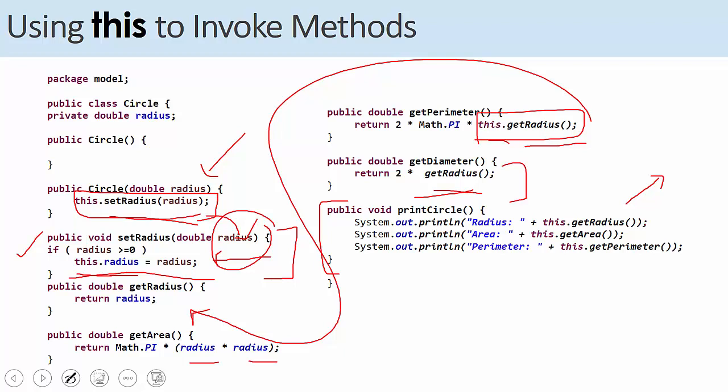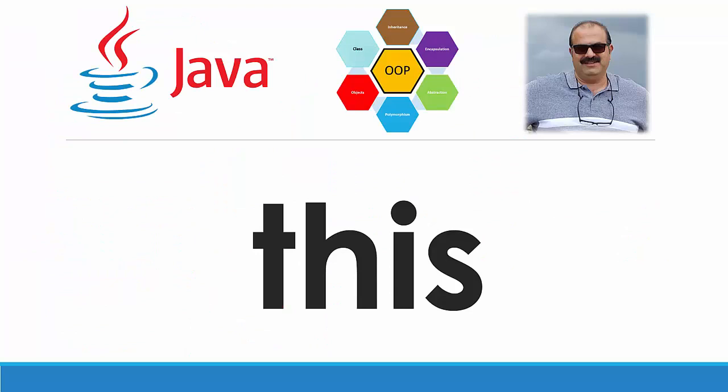So we have seen three uses for this: to avoid overshadow, to avoid duplication of code when you use constructor overloading, and to call methods and instance variables inside the class itself. There are other advanced uses of this in Java. We're going to keep them for a later tutorial.